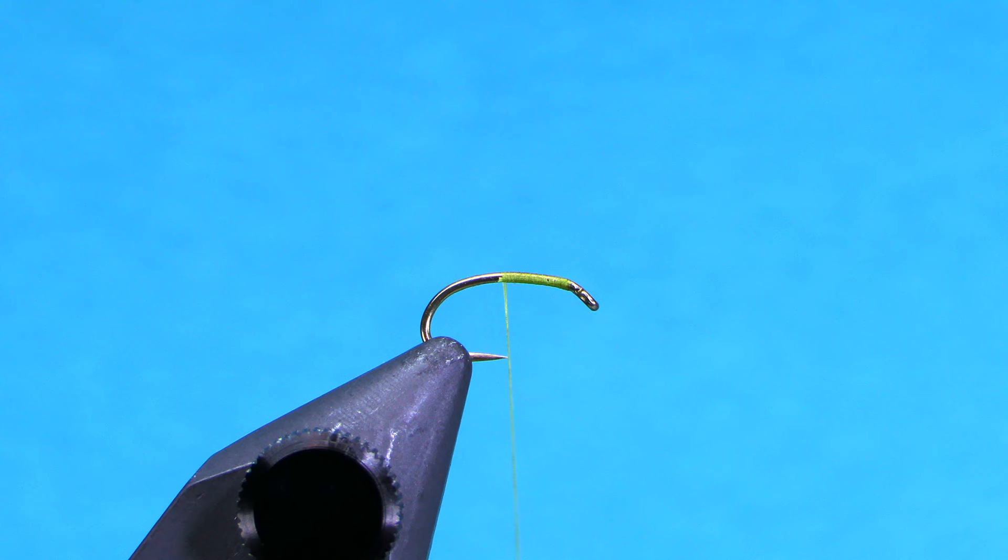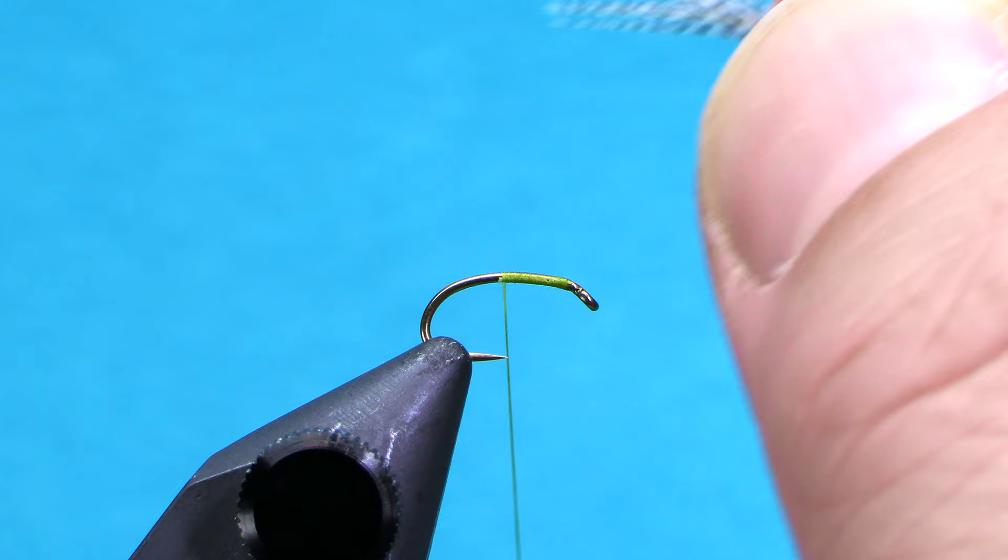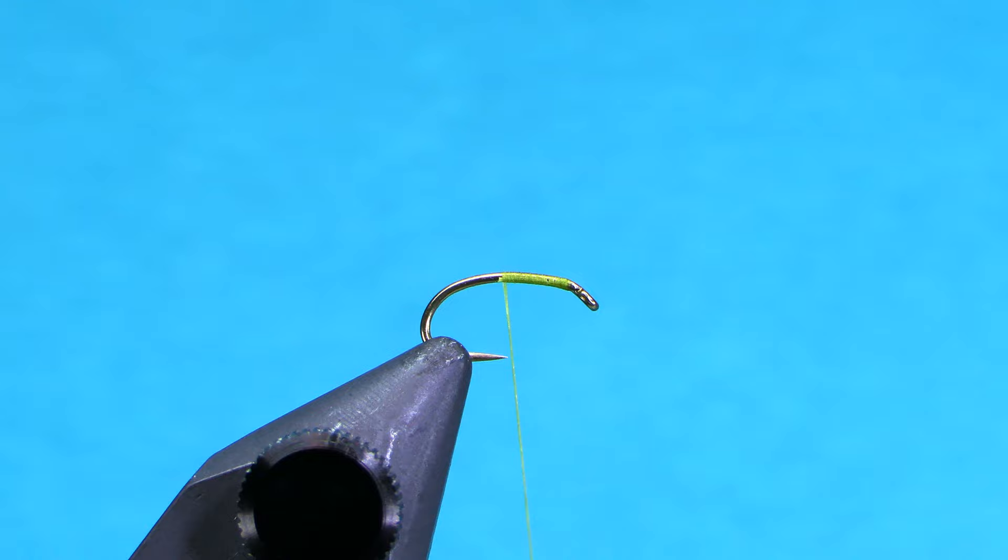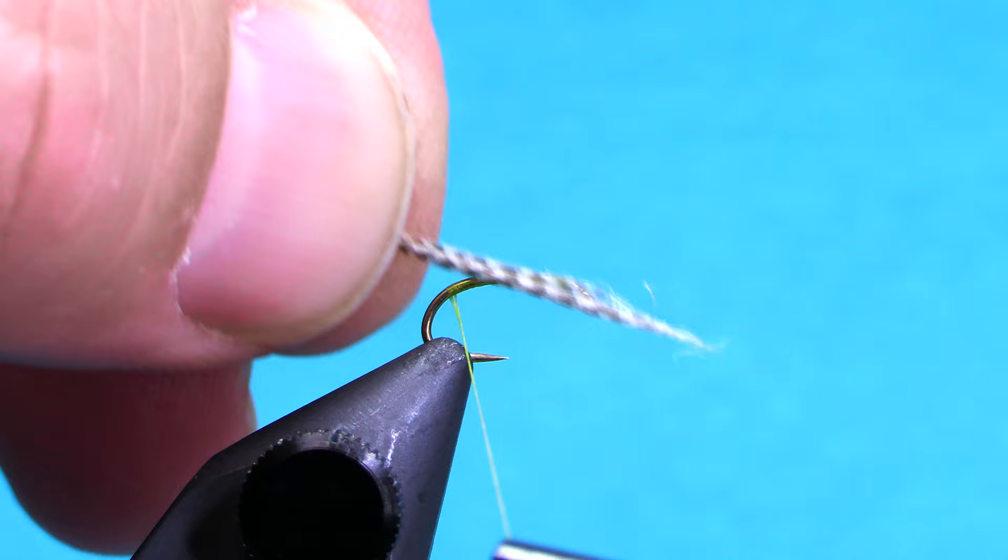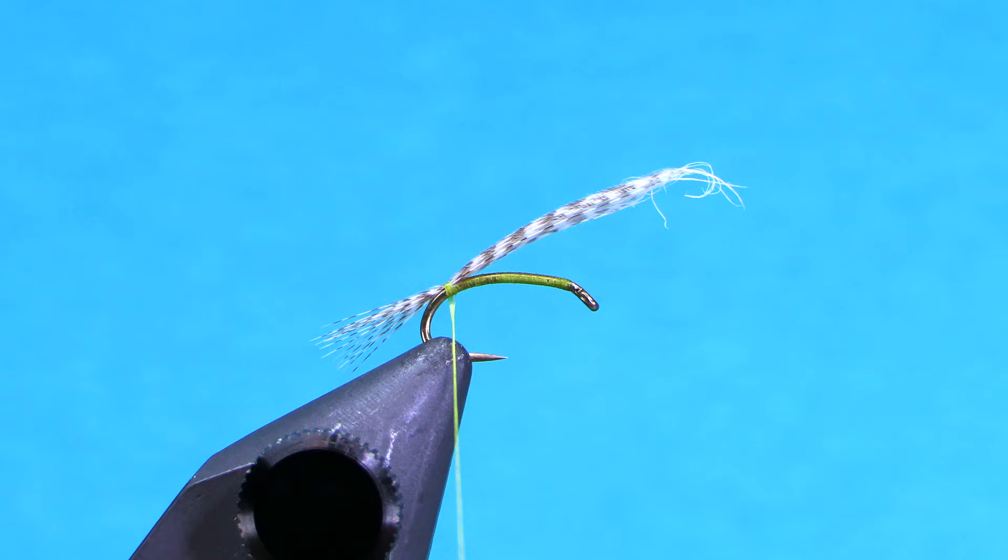All I'm going to do is just take a clump there, peel it off so I get a nice little bundle of fibers. Hopefully you kept the tips relatively evened out. Then let's work our way back just past the hook point, closer to where the barb is, and we'll tie in our little bundle of fibers there. I'm just going to keep some tension on there and I'm going to shorten those up just a little bit.